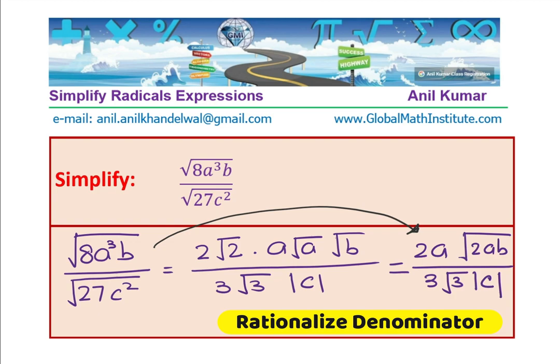However, do you notice that we have square root 3 in the denominator? So, that is what I am saying. You cannot leave it in the denominator and therefore, you need to rationalize the denominator.